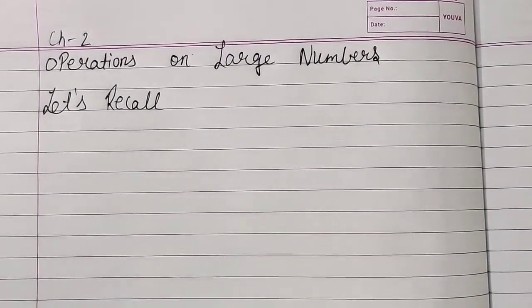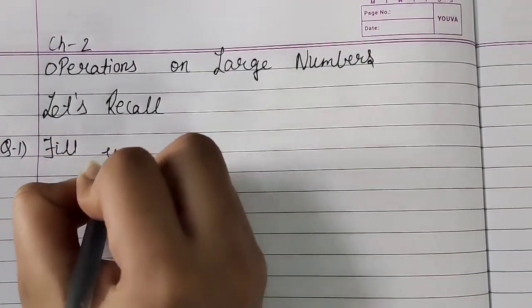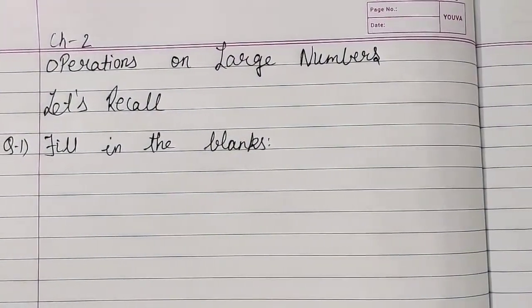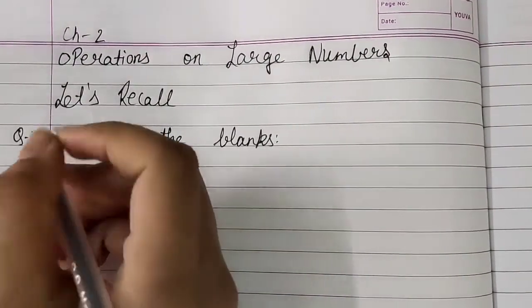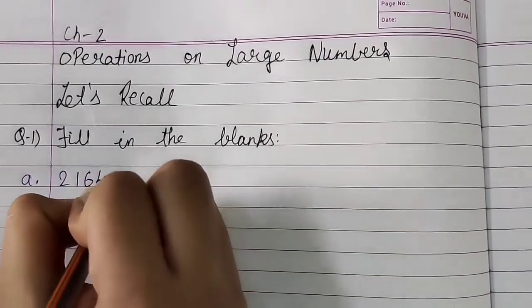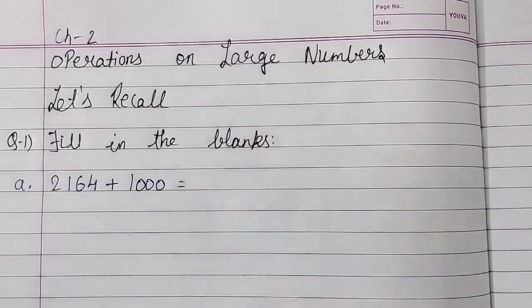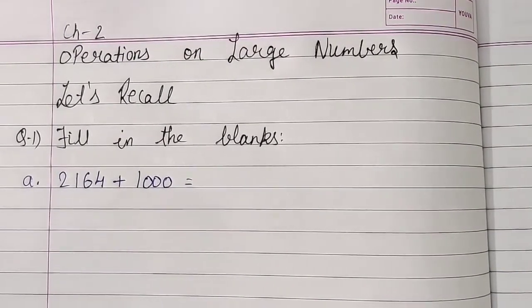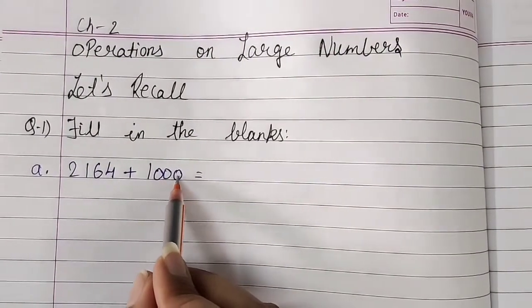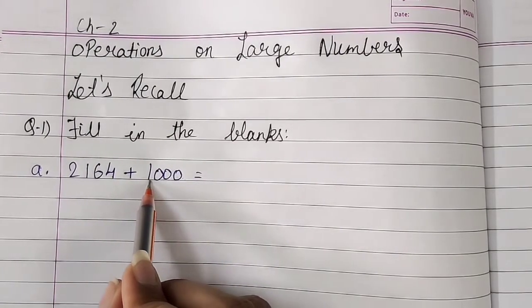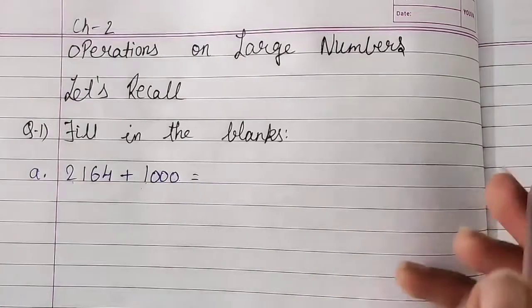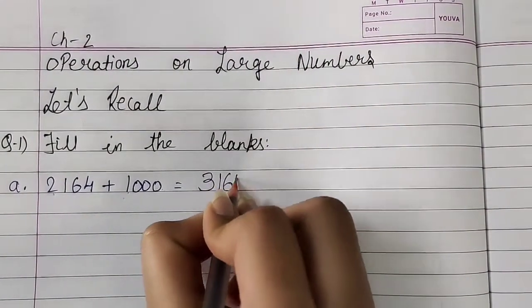Now, question number 1 is fill in the blanks. Number (a): 2,164 plus 1,000 equals dash. Students, 2,164 mein hume 1,000 plus karna hai. We can do it orally. Here, all 3 digits of 1,000 are zero, and there is only 1 in the thousands place. So we just add 1 to the thousands digit: 2 plus 1 is 3. So the answer is 3,164.